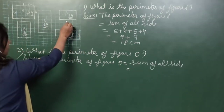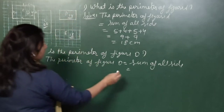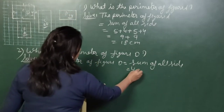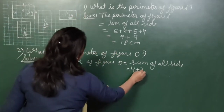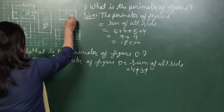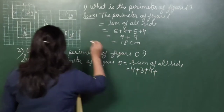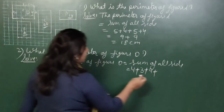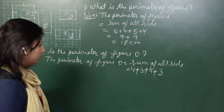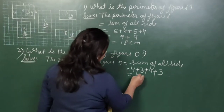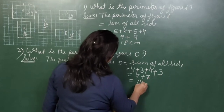Counting the boundaries of figure D on the square grid: first boundary is 4 squares, second boundary is 3 squares, third boundary is 4 squares, and the next boundary is also 3 squares. Adding them: 4 + 3 = 7, and 4 + 3 = 7, giving 7 + 7 = 14 cm.